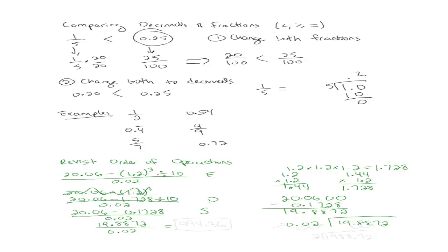Yeah, what do you have to change it to? Yeah, the number of the divisor can't be a decimal, so I have to make it a whole number. So I need to move it to the right twice, which means I need to move this one to the right twice.